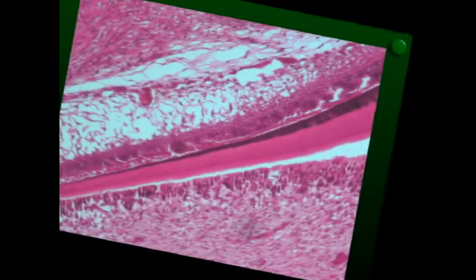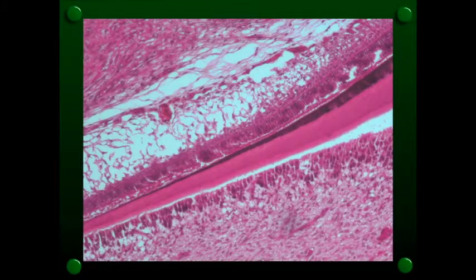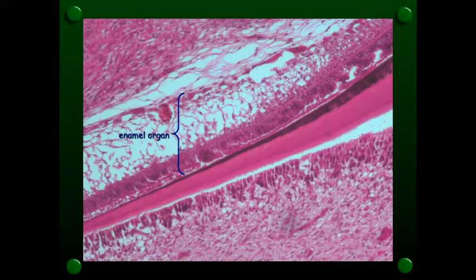Let's look at this close-up. Once again, here's the enamel organ. So we have our outer enamel epithelium out here, our stellate reticulum here, and then our inner enamel epithelium. So that inner enamel epithelium, once again, became the ameloblasts forming the enamel.